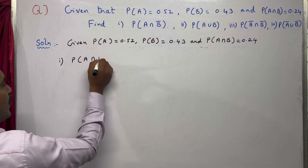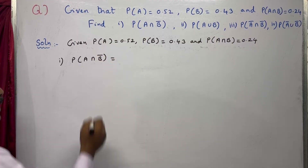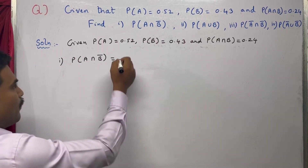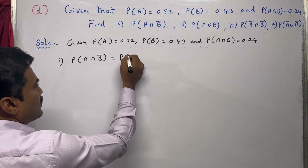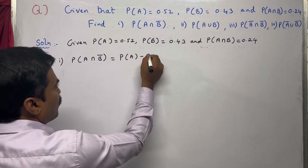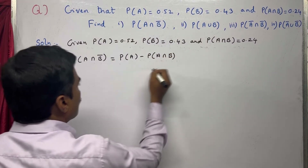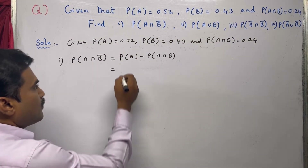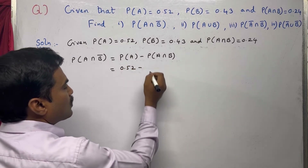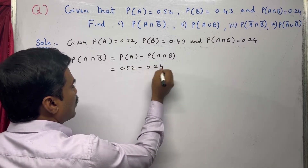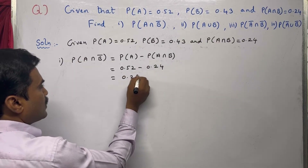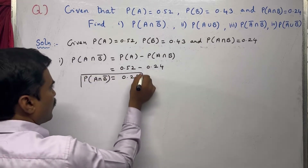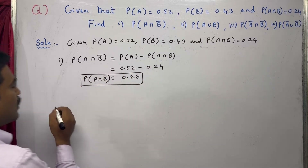The first one is P(A∩B̄). To find this, we use the formula: P(A∩B̄) = P(A) − P(A∩B). P(A) is 0.52 and P(A∩B) is 0.24. Subtracting: 0.52 − 0.24 = 0.28. So P(A∩B̄) = 0.28. The first part is complete.